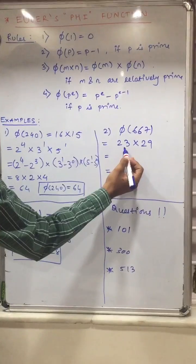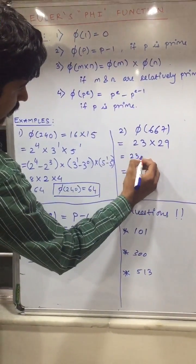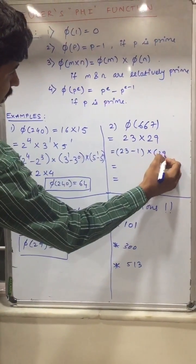Now as you can see that 23 is a prime number, so apply rule number 2. It will be 23 minus 1 into 29 minus 1.